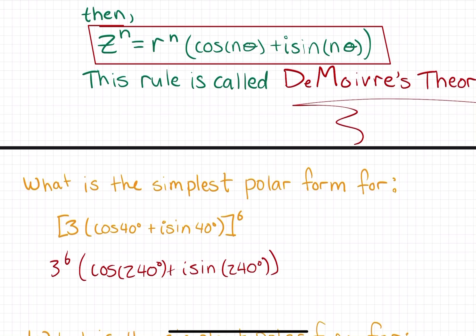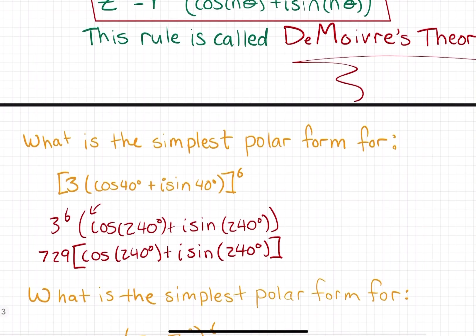If you have a calculator handy, 3 to the power of 6 is 729. So 729 cosine 240 degrees plus i sine 240 degrees. If you wanted to convert this to rectangular form, all you have to do is distribute that 729, and then plug in cosine 240 and sine 240. What you'll get is your A and your B for your rectangular form in the form A plus Bi.